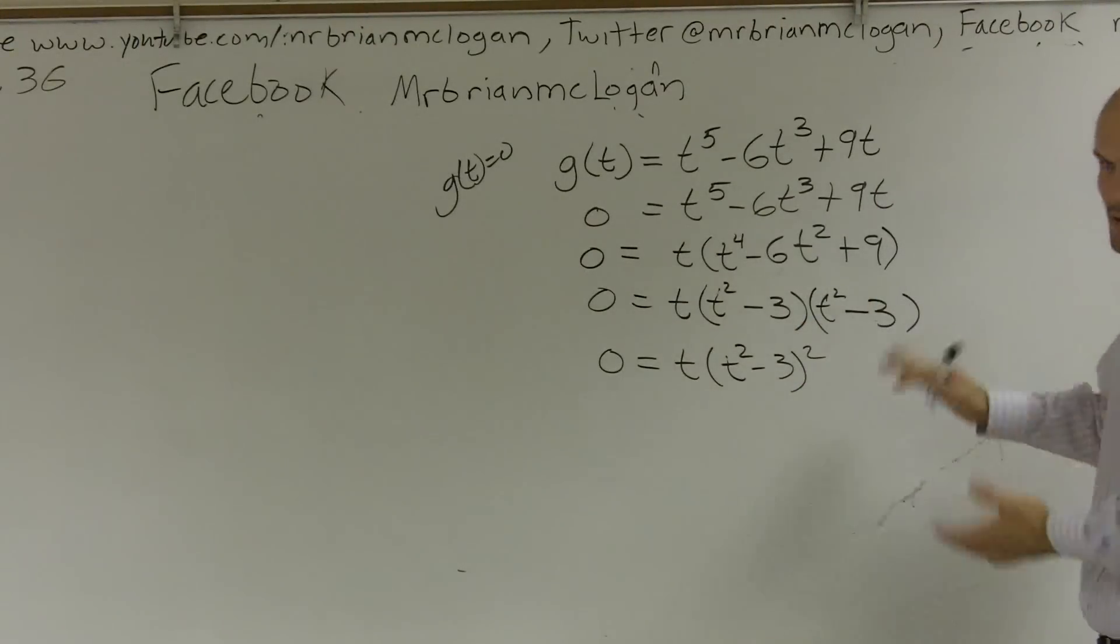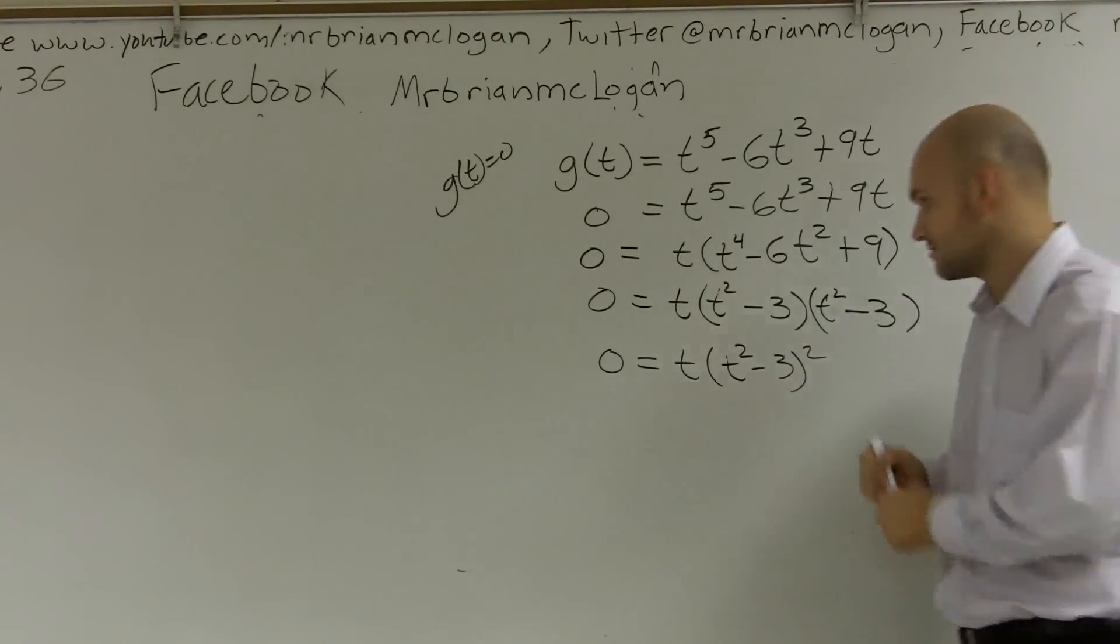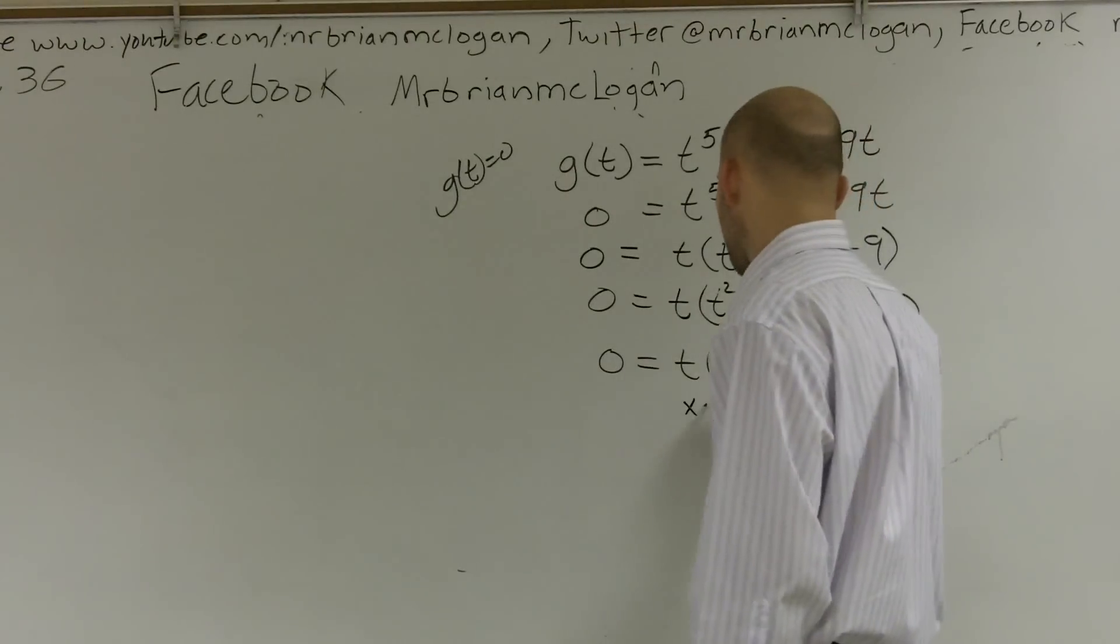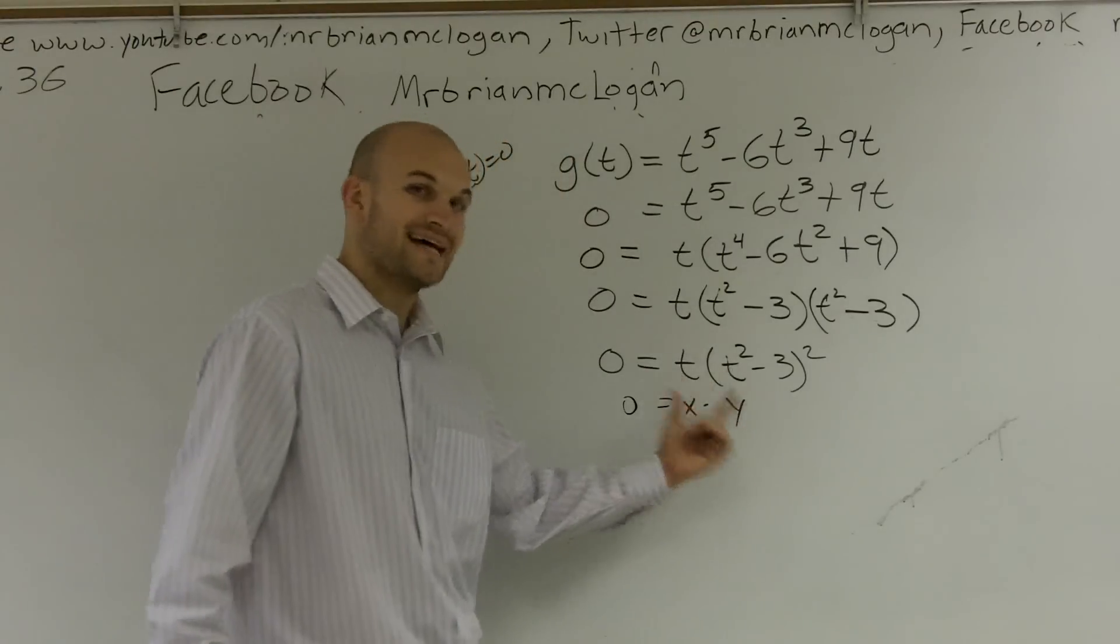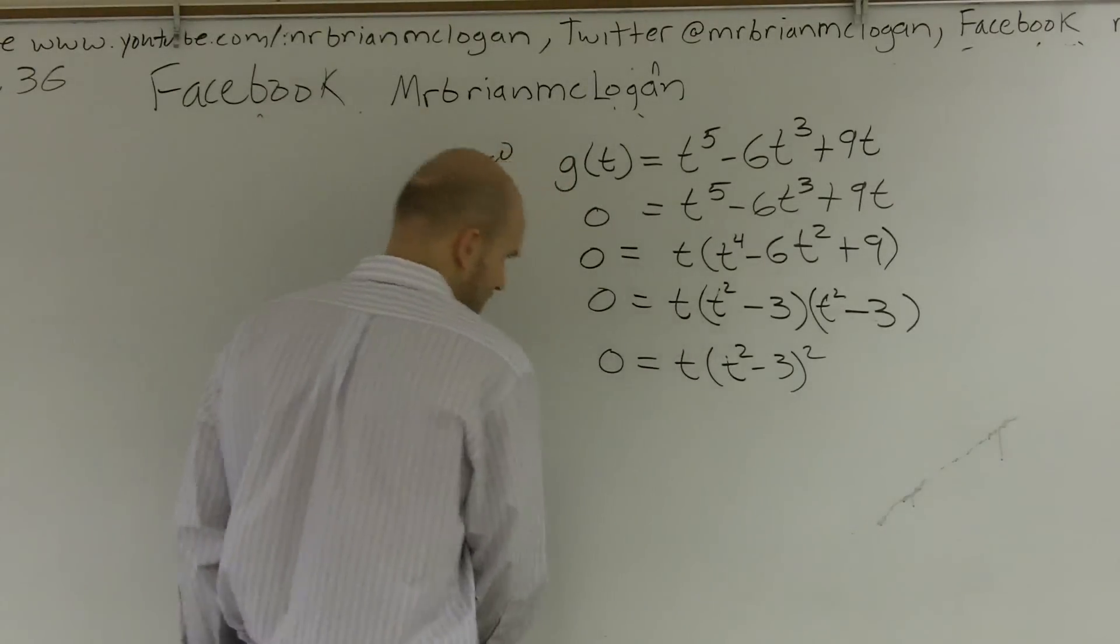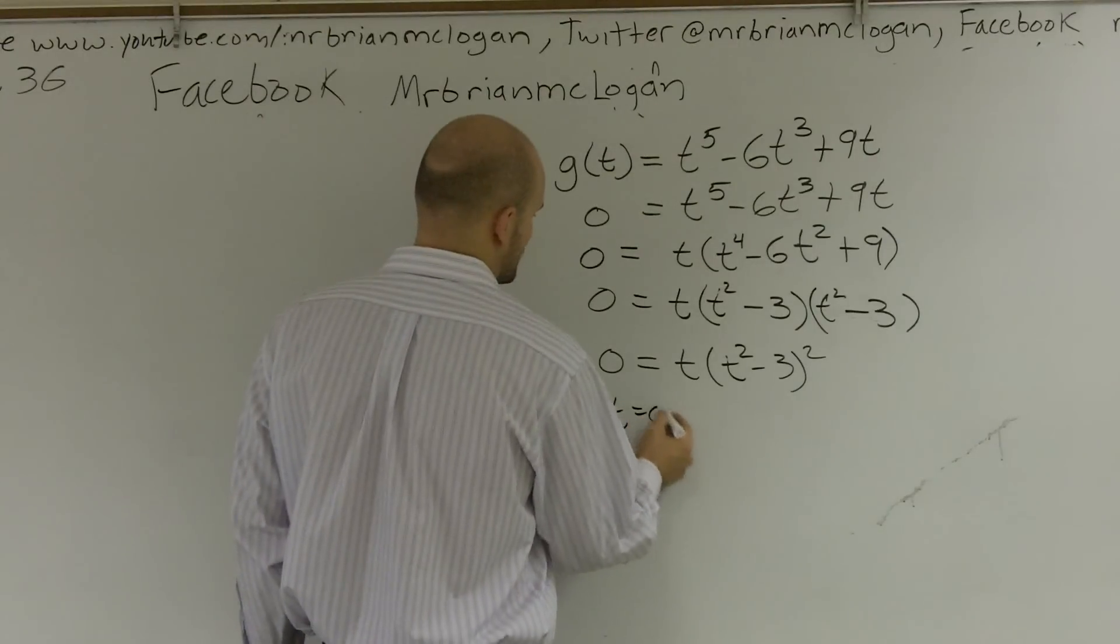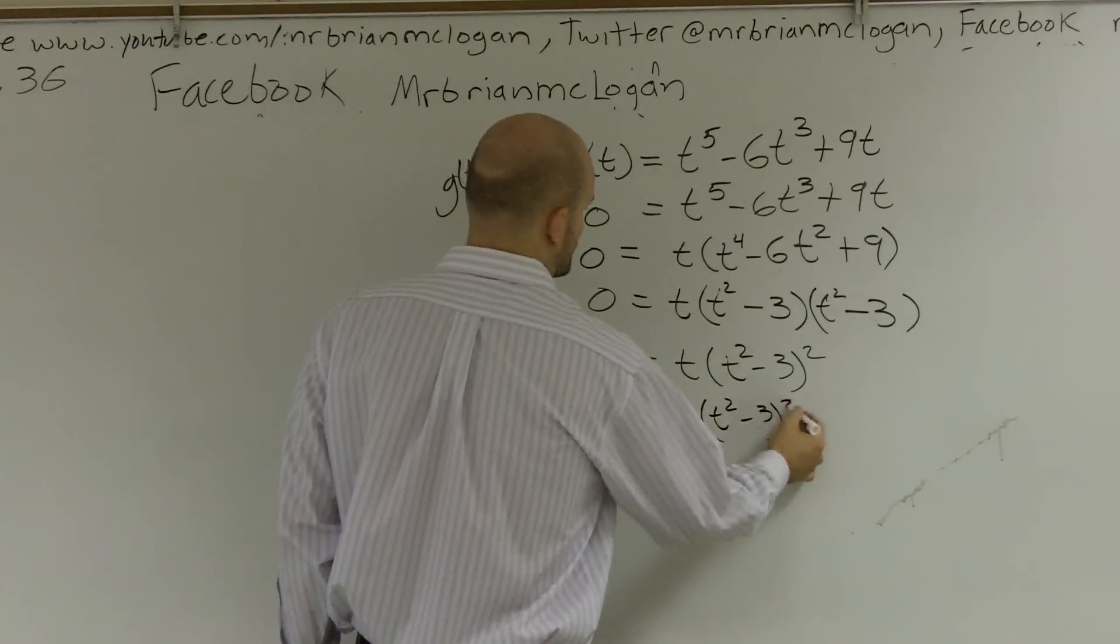Now, we'll talk about multiplicity a little bit more in just a second. But for now, next thing we need to know is now we have a set of linear factors. I can say x times y equals zero. I know that one of these numbers has to equal zero. So we're going to set our two factors equal to zero. t is equal to zero. And t squared minus 3 squared equals zero.